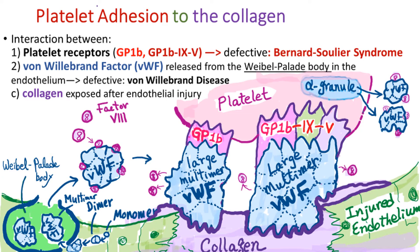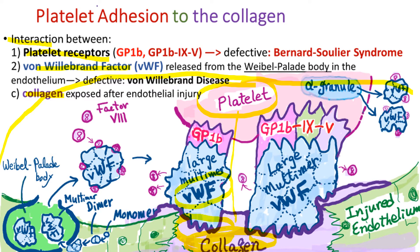Now let's study platelet adhesion in more detail. Platelet adhesion involves an interaction between platelet receptors, von Willebrand factor, and collagen. The von Willebrand factor functions as a glue so that the platelet can adhere to the collagen at the injury site. On one end, it is firmly anchored to the collagen, and on the other end to the platelet through binding the platelet receptor glycoprotein 1b — we simply call it GP1b.